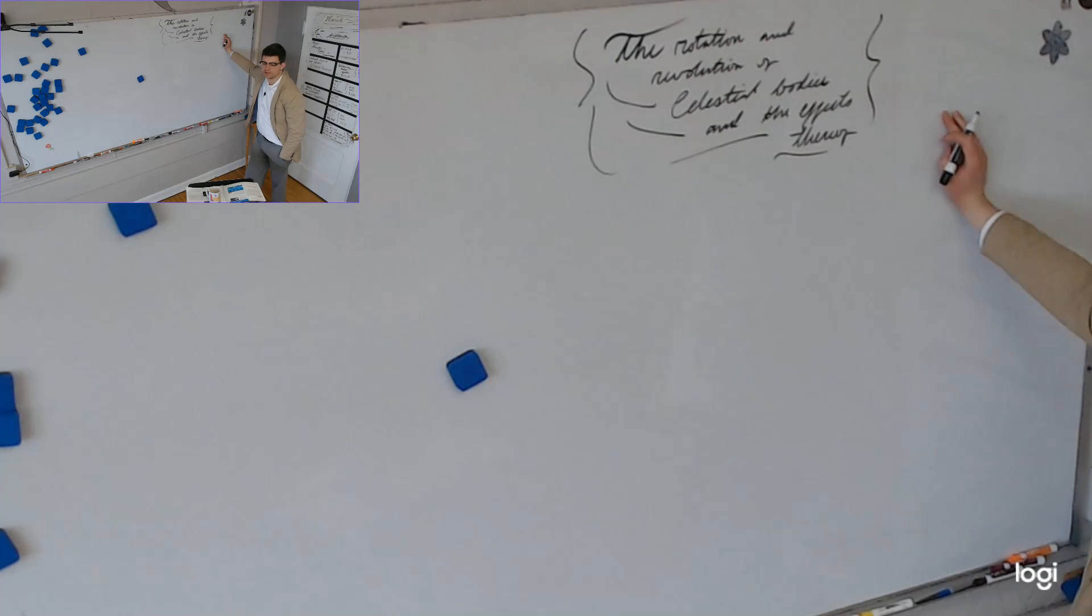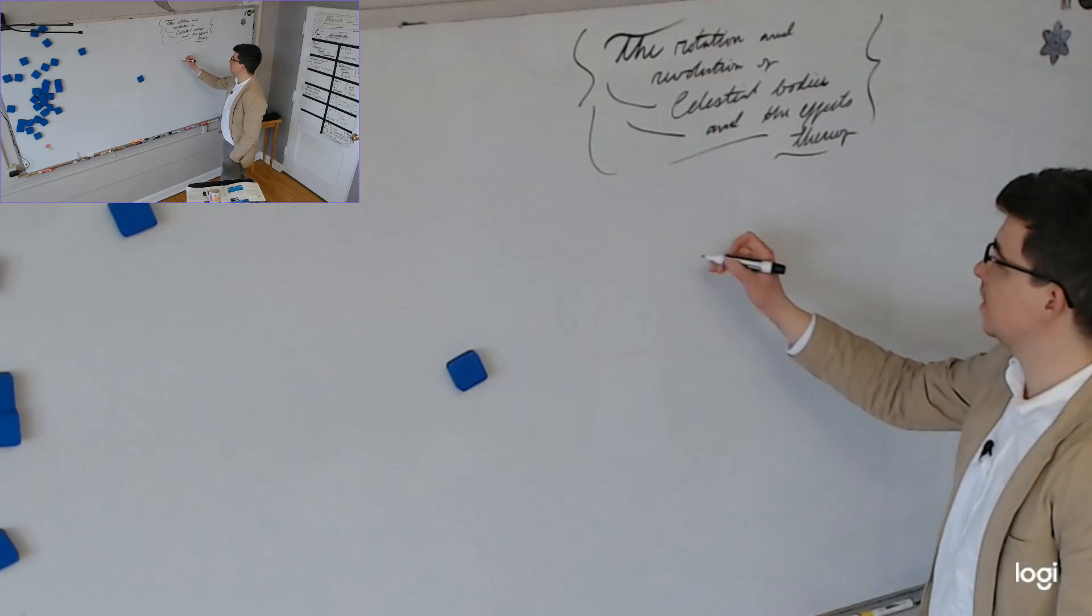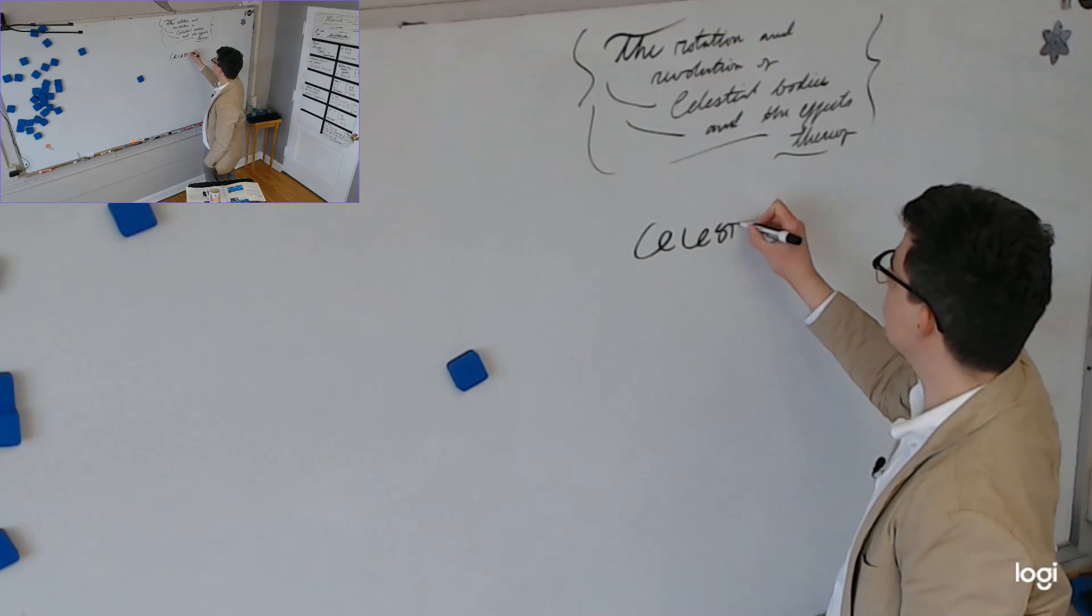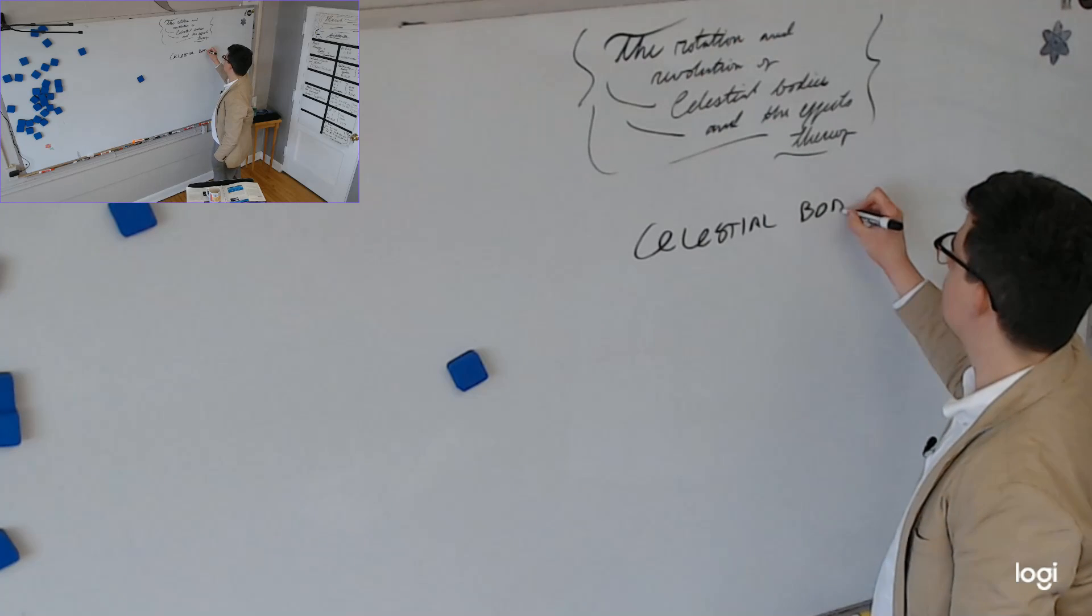Do you understand what this means? Let's have someone explain this. What's the key word of this structure here? Celestial bodies. So let's define celestial bodies real quick. What's a celestial body?